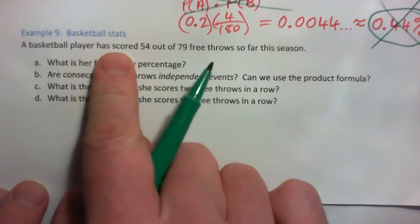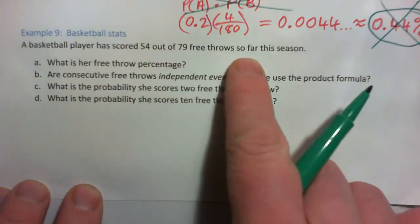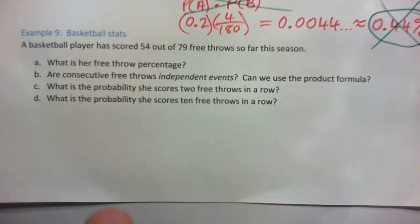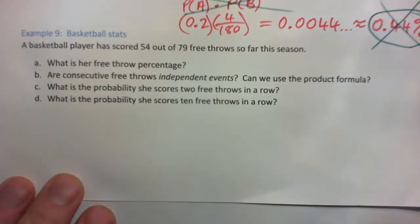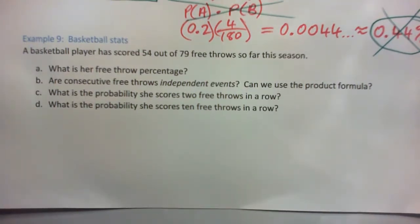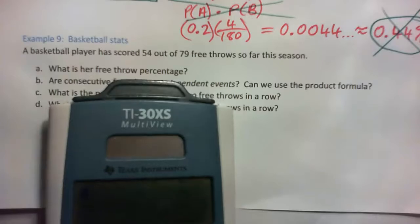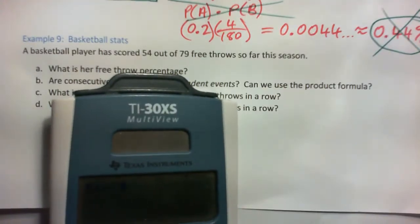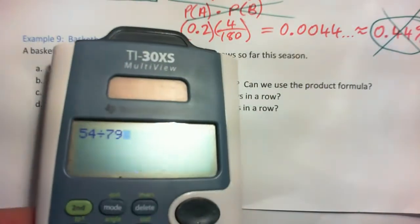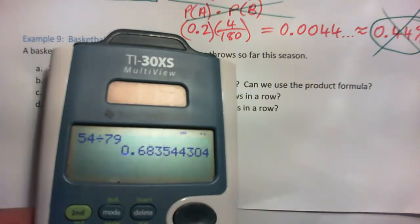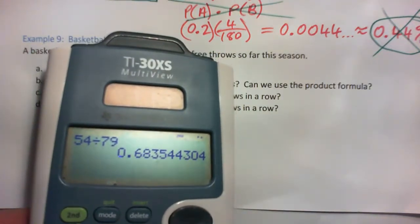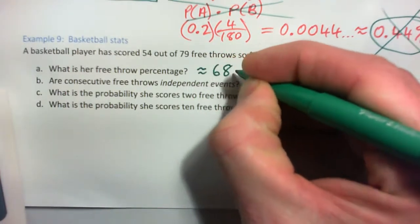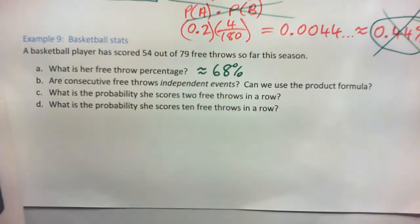Example 9: a basketball player has scored 54 out of 79 free throws so far this season. What is her free throw percentage? We just calculate 54 ÷ 79, which gives 0.6835 — approximately 68%.